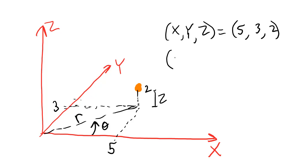In the cylindrical coordinate system, the position of the point r, theta, z would be about 5.8, 31 degrees approximately, and 2 for the z height.